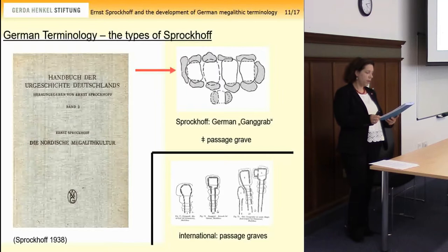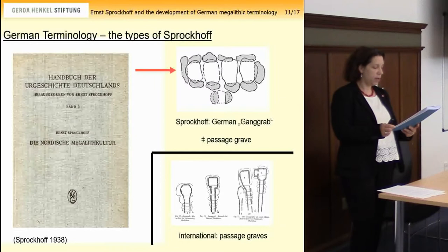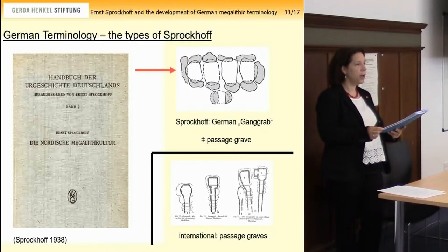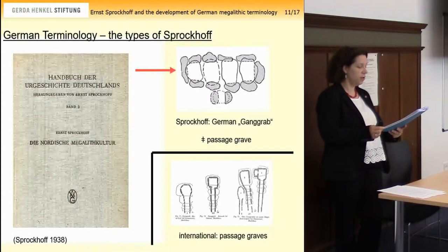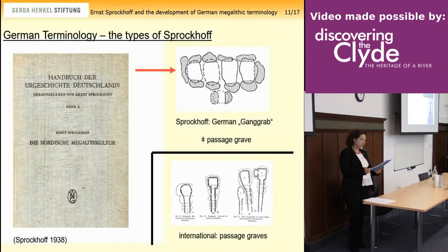Sprokhoff used repeatedly the ideological foundations of his argumentation. This monograph from 1938, along with his later-edited Megalithic Atlas, remains a standard work and reference of German megalithic research till today. We German megalithicians still do not quote the text anymore, but the book as a whole. Even later on, Sprokhoff did not distance himself from these Germanic-centric statements.